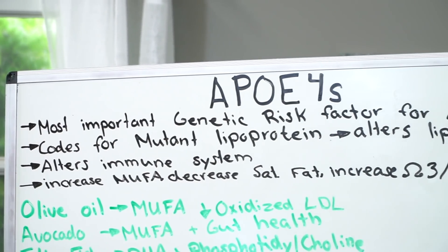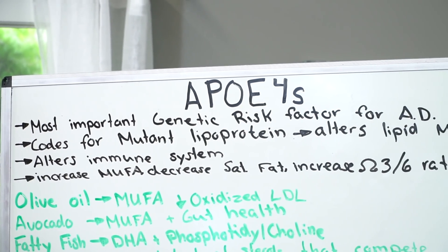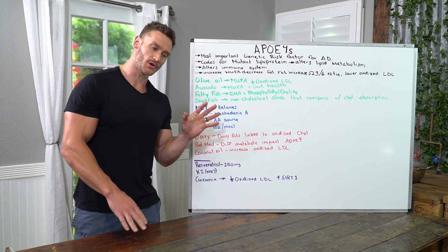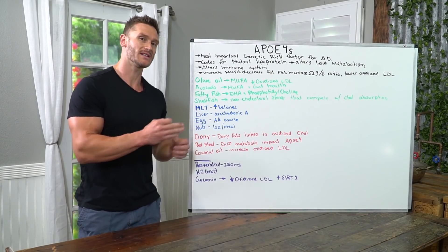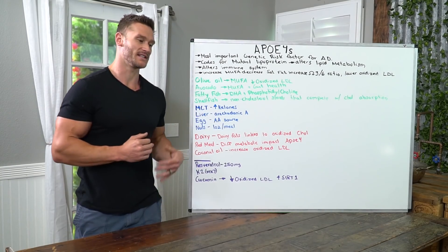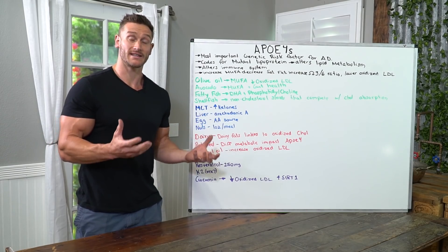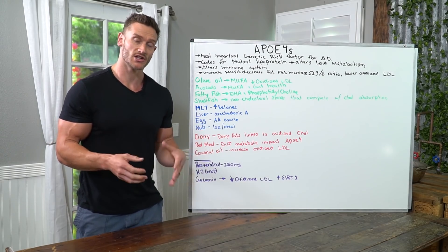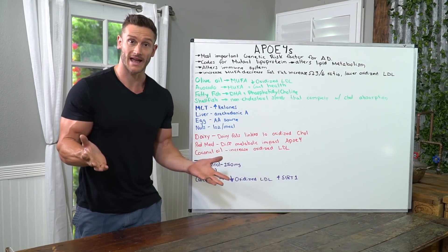So APOE4, it's the most important genetic risk factor for Alzheimer's disease, but it's also has a lot of other pieces. The reason it's such a risk factor for Alzheimer's disease is it affects the oxidation of a lot of these healthy fats. It affects the oxidation of docosahexaenoic acid.